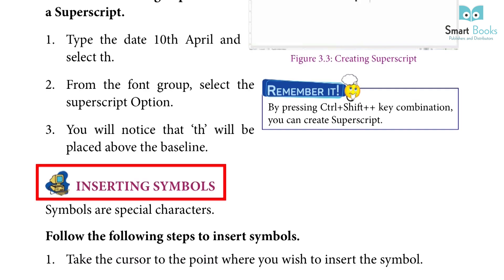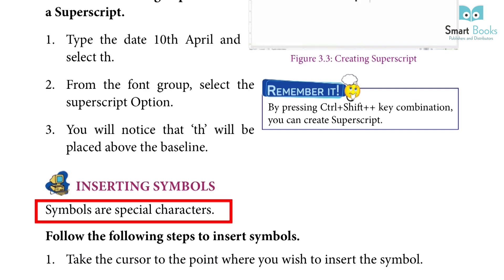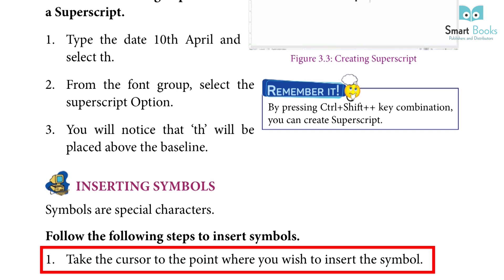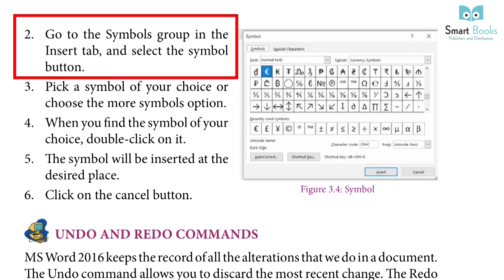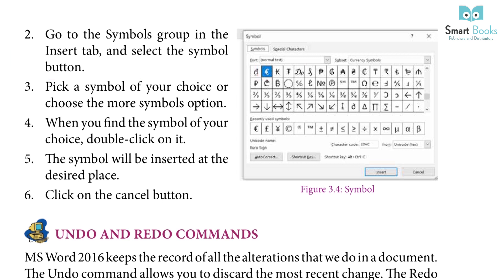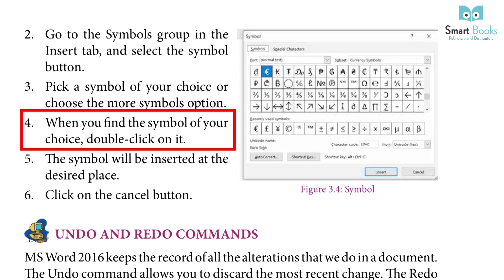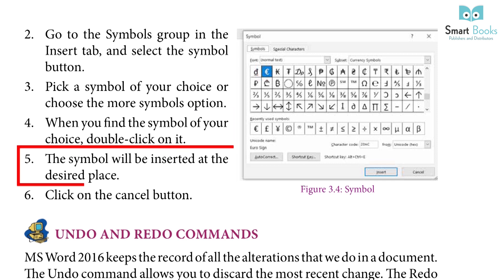Inserting Symbols: Symbols are special characters. Follow the following steps to insert symbols: 1. Take the cursor to the point where you wish to insert the symbol. 2. Go to the symbol group in the insert tab and select the symbol button. 3. Pick a symbol of your choice or choose the more symbols option. 4. When you find the symbol of your choice, double click on it — the symbol will be inserted at the desired place.